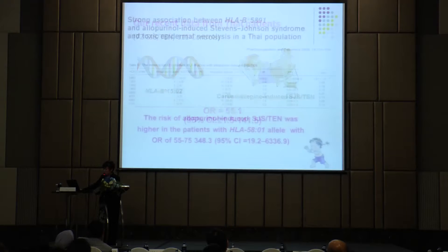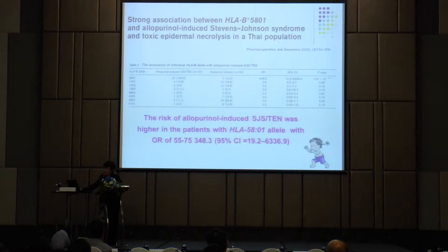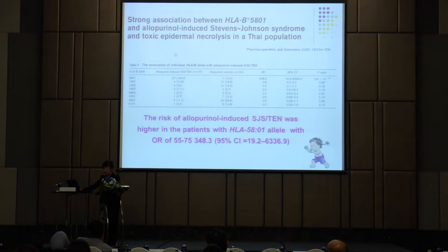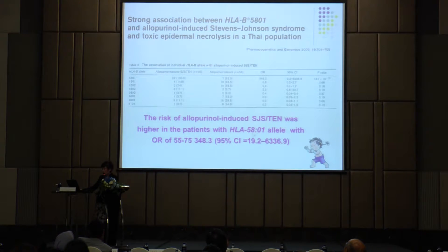That is why many hospitals are now screening for 1502 before prescribing carbamazepine in our patients. Strong association for HLA-B*5801 with allopurinol-induced Stevens-Johnson syndrome and TEN was also shown in our Thai population. We found that the odds ratio for patients who carry 5801 is almost 348-fold higher.